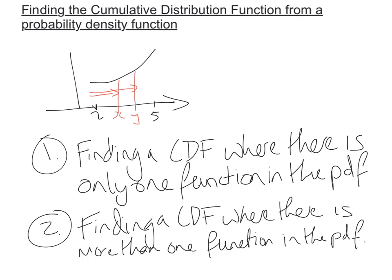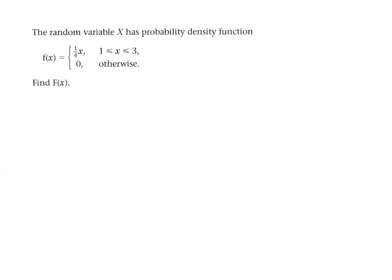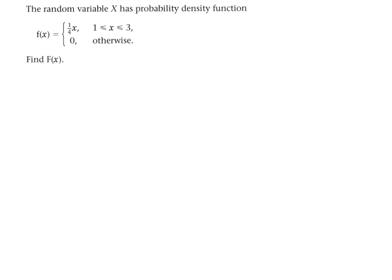Let's get to our first example — a nice simple one. We've got a straight line graph between 1 and 3. At x = 1, it has a height of a quarter, and at x = 3, it has a height of three quarters. So it's a straight line between those two points. That's our PDF.